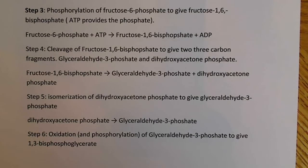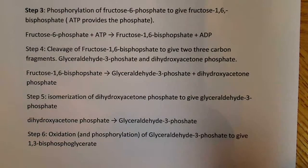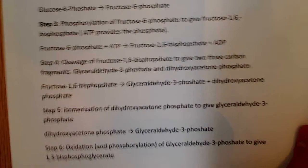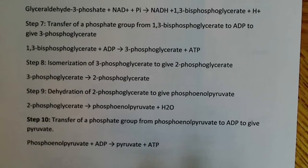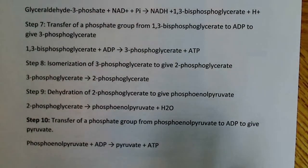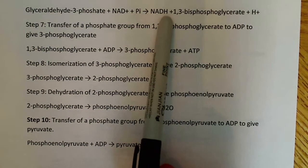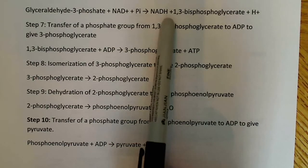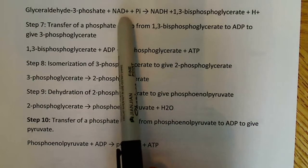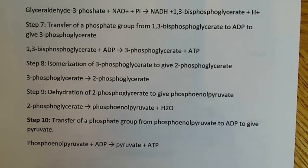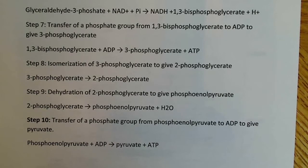Step six is oxidation and phosphorylation of glyceraldehyde-3-phosphate to give 1,3-bisphosphoglycerate. Glyceraldehyde-3-phosphate plus NAD+ — we have an electron carrier, and it's going to become a reduced electron carrier. This tells you that glycolysis requires NAD+, and we'll talk about how you can regenerate NAD+ by going through anaerobic glycolysis, essentially, or fermentation, to make lactic acid or lactate.